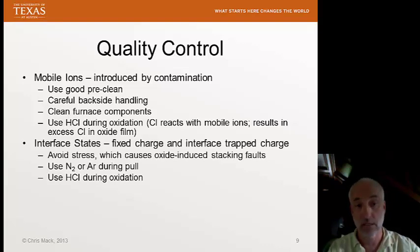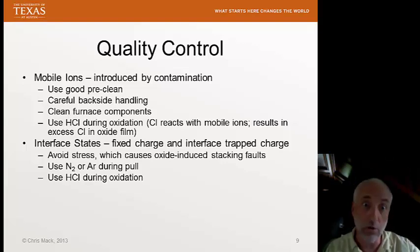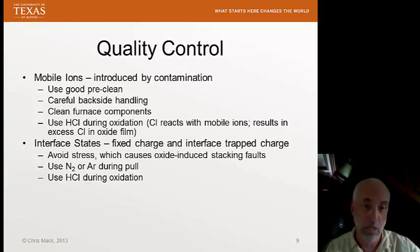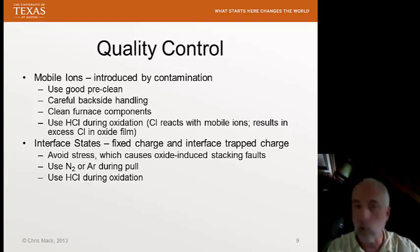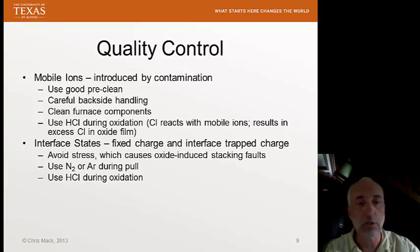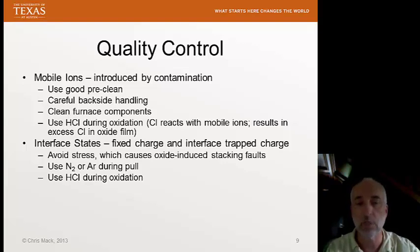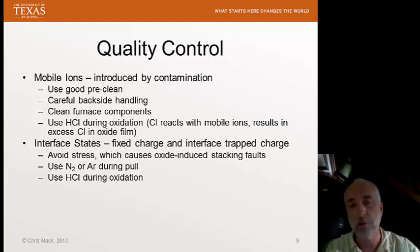We also have interface states — the fixed charge and interface trapped charge — and we need to minimize their amount. We avoid stress, as it causes oxide-induced stacking faults that mess up the crystal structure right at the interface, resulting in more dangling bonds, more fixed charge, and more interface trapped charge. We use nitrogen or argon during the pull to anneal and reduce these stresses. The use of HCl during oxidation can also grab up fixed charge and neutralize it.